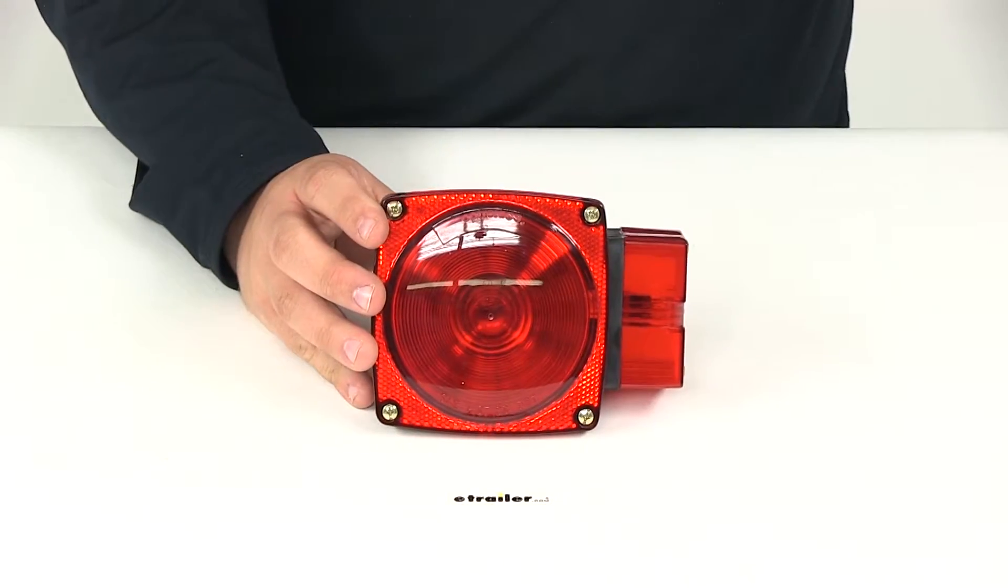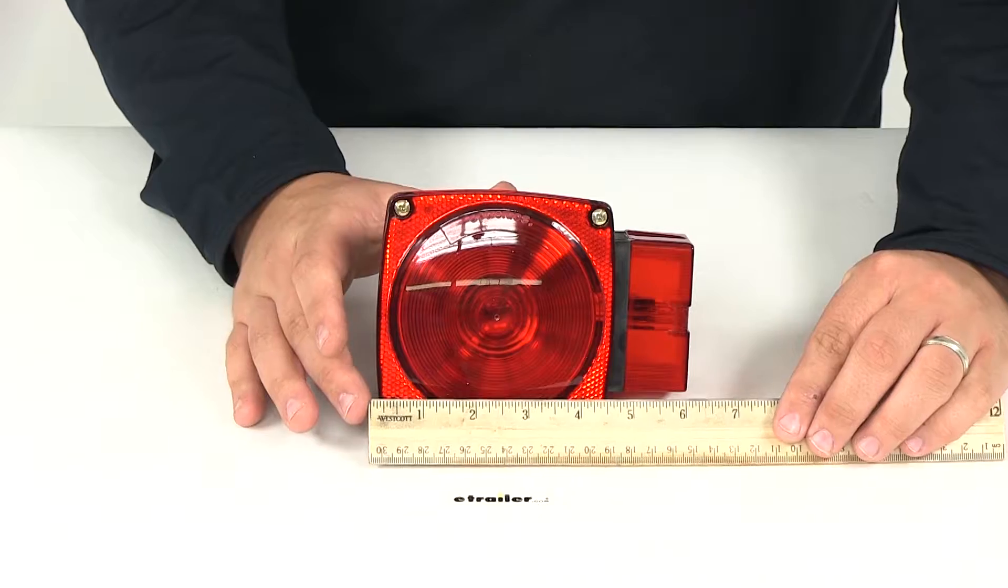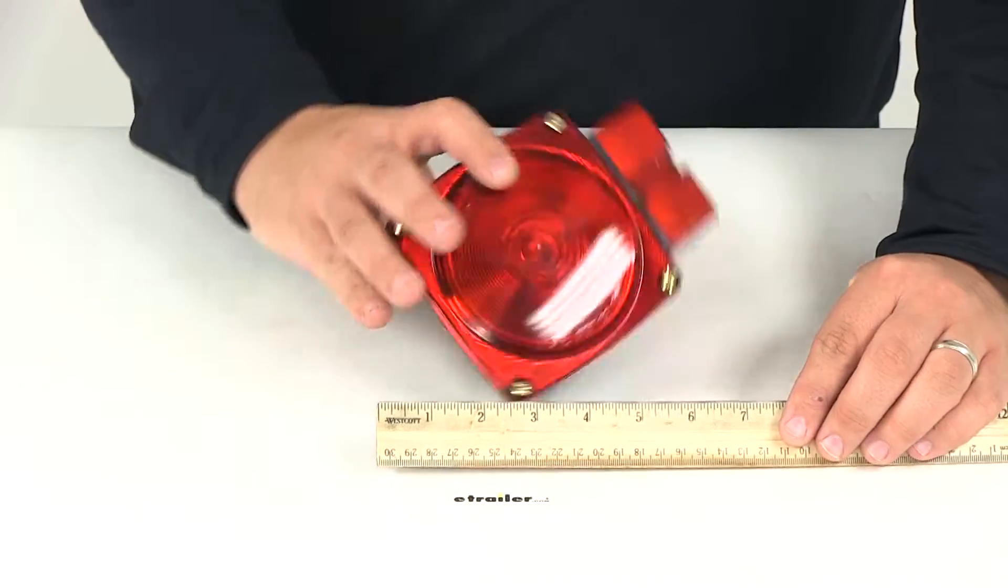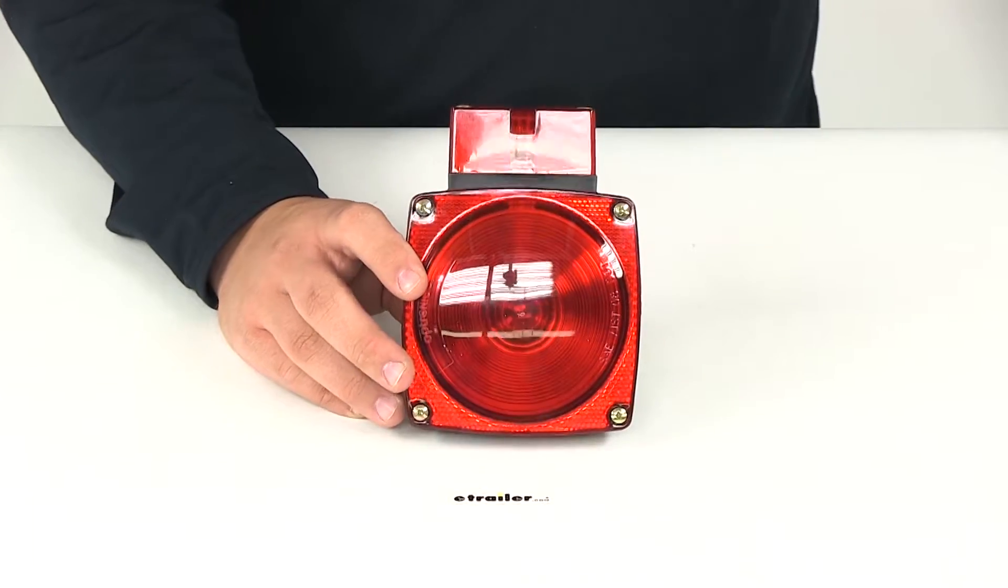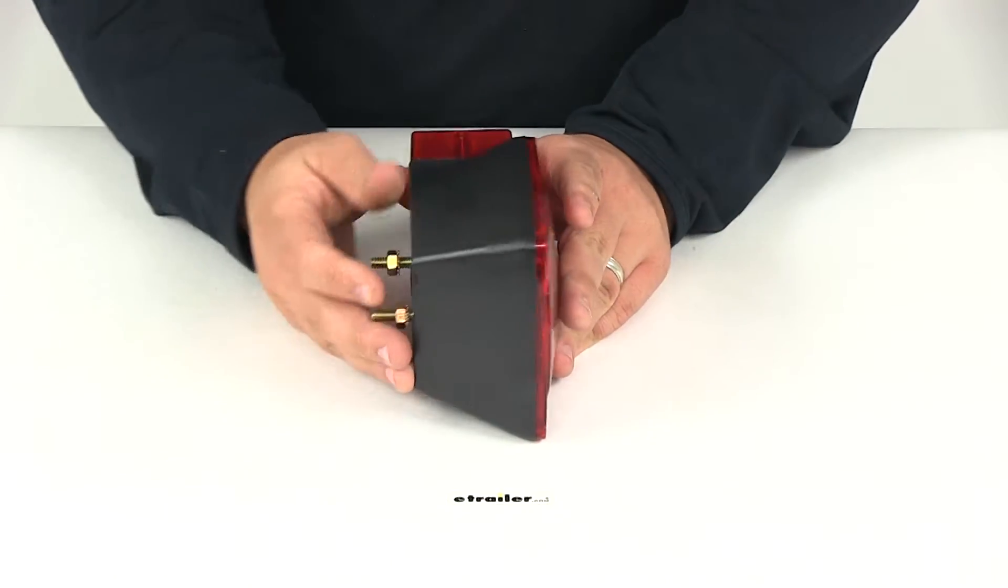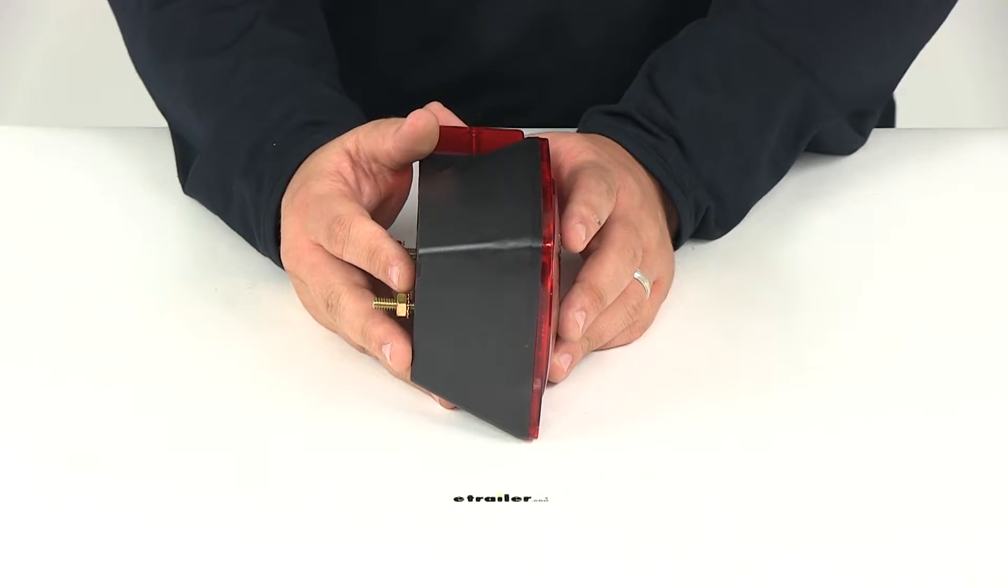Taking a look at the overall measurements, it's going to give us an overall length of about six and one-eighth of an inch, an overall width of about four and nine-sixteenths of an inch, and then measuring the depth, about two and seven-eighths of an inch.